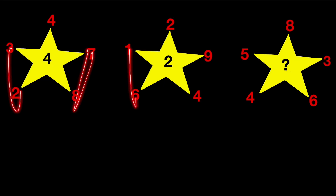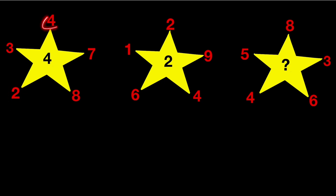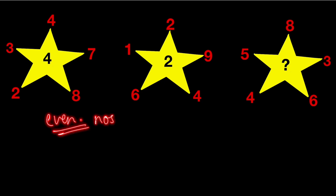We have to use some mathematical operations. If you observe carefully, the outer numbers include multiples of 2 — these are all even numbers. Then we also have 3, 7, 1, 9, 5, 3 — these are all odd numbers. So what is the relation between these even and odd numbers and the central number?